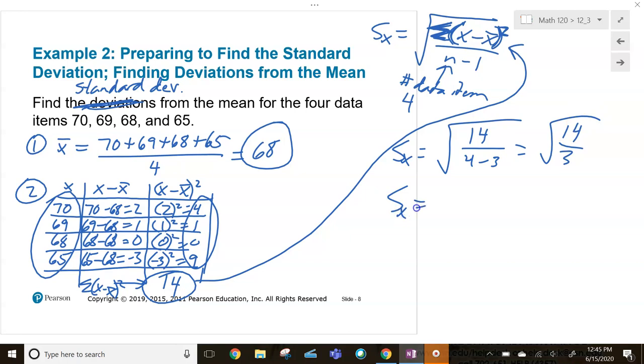So our standard deviation is, let's see, 2.16024, 6899, so let's round it to the nearest hundredth, 2.16. Okay.